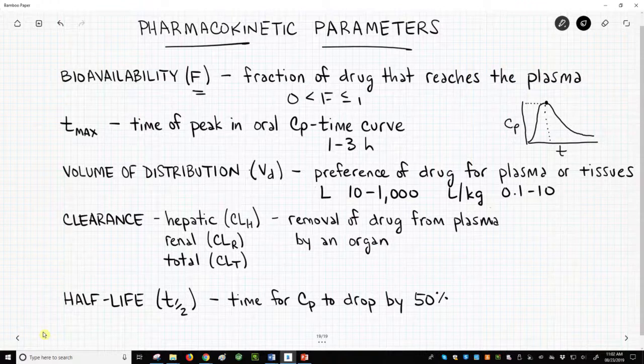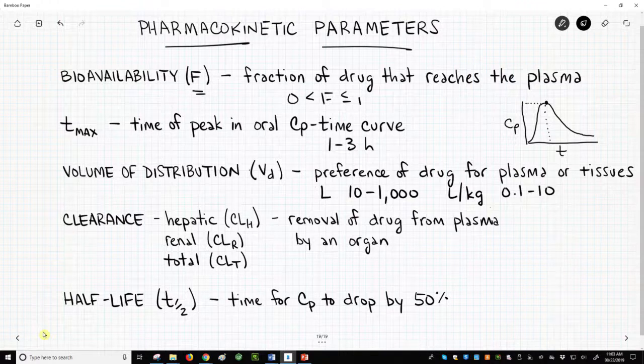Half-life. Half-life describes how long is required for the plasma concentration to drop by 50 percent. Half-life is likely the most important single pharmacokinetic parameter. Half-life is closely tied to both volume of distribution and clearance.